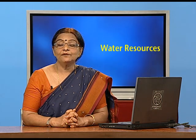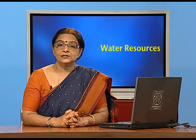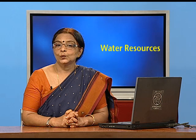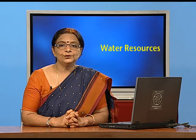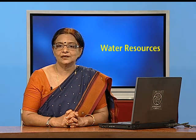Consider two examples of groundwater development. Jammu and Kashmir has only 1.07% of developed groundwater resources, whereas Punjab has 98% of developed groundwater resources. Think about the reasons for this variation in the development of water resources between these two states.